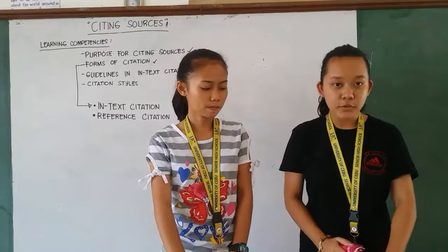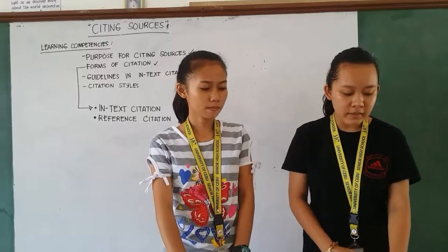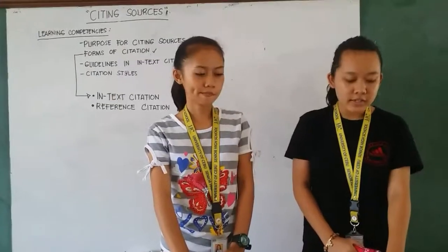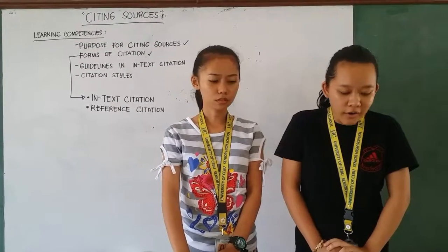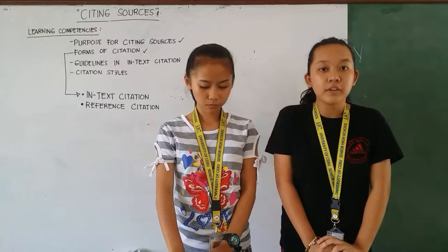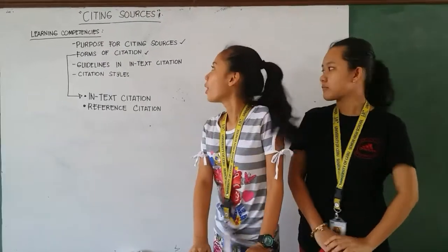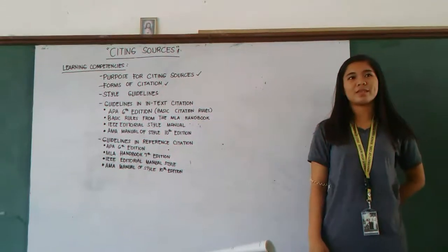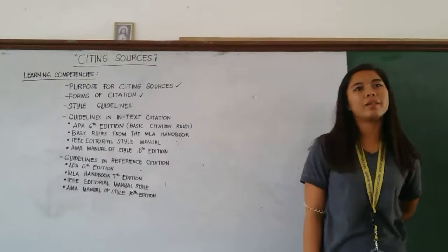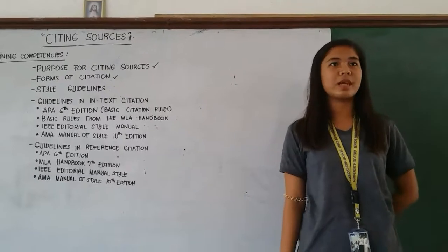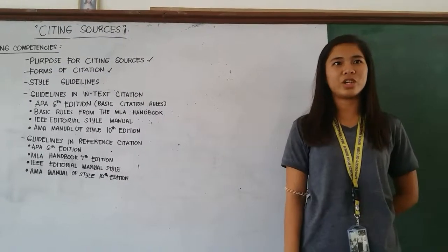It gives authority to the reader, provides a source for your statements, and acknowledges the fact that the information used in the paper did not originate with the writer. This topic is based on rules from the MLA Handbook, 7th edition chapter 6, and MLA style 5th edition chapter 7.